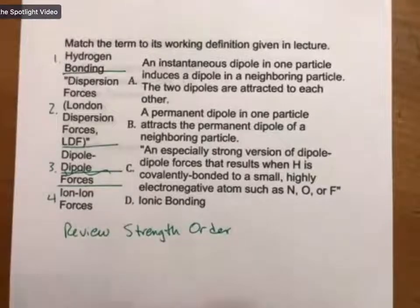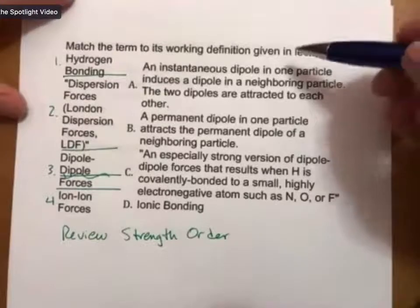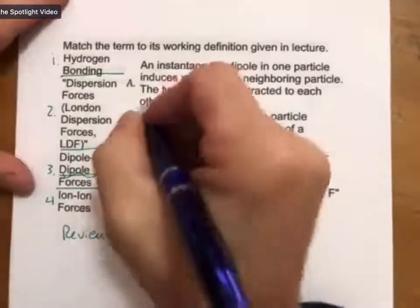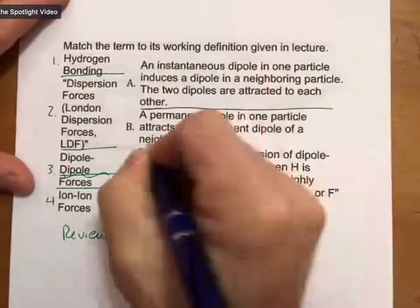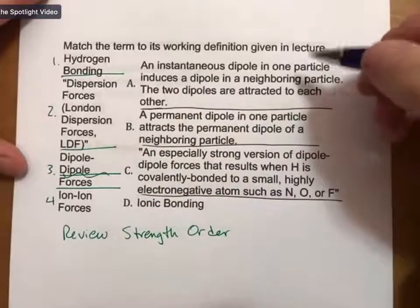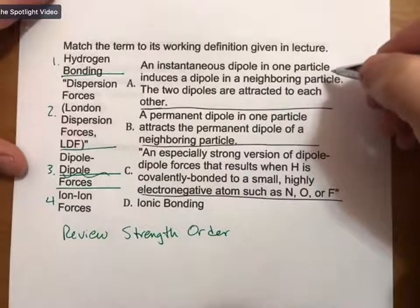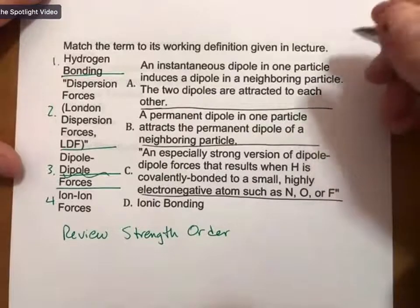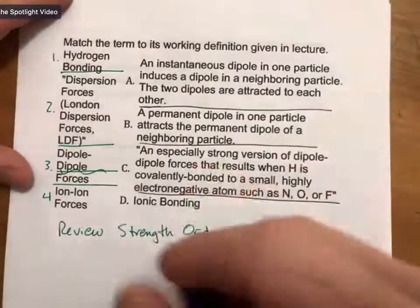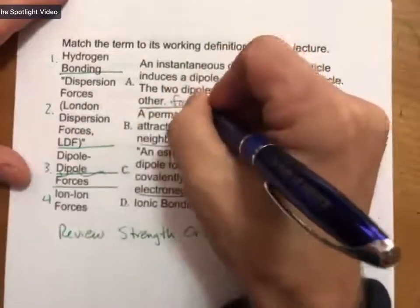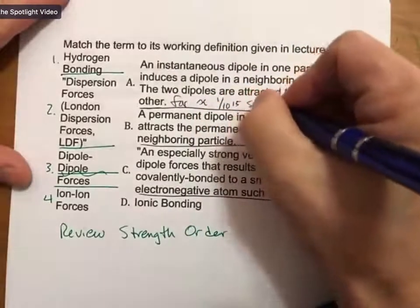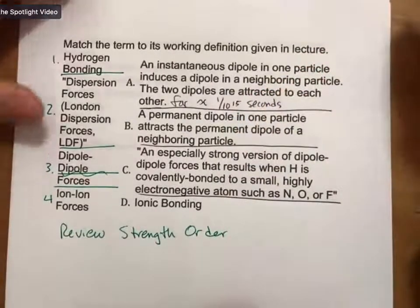We're going to be doing a matching question. The problem says match the term to its working definition given in lecture. It's a little messy here, but let me divide up my terms. The first term is an instantaneous dipole in one particle induces a dipole in a neighboring particle. The two dipoles are attracted to each other, and I might as well add to that approximately 1 over 10 to the 15 seconds, so very, very short time.